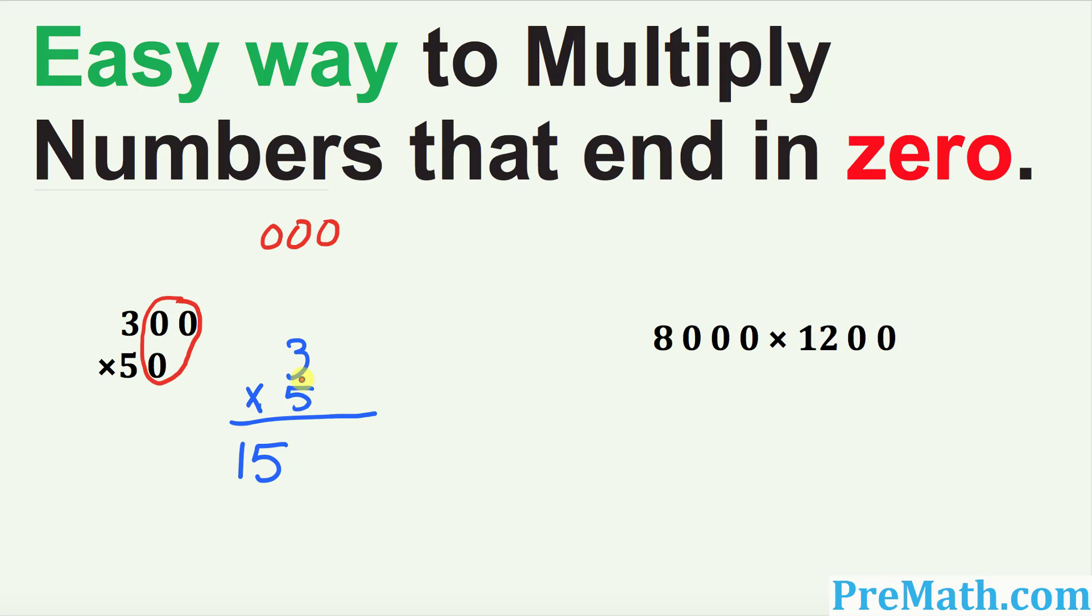Once we are done with this multiplication, I want you to go ahead and plug these numbers back over here. So this is going to simply become 15, and how many zeros are there? Three zeros. And that is your complete answer.